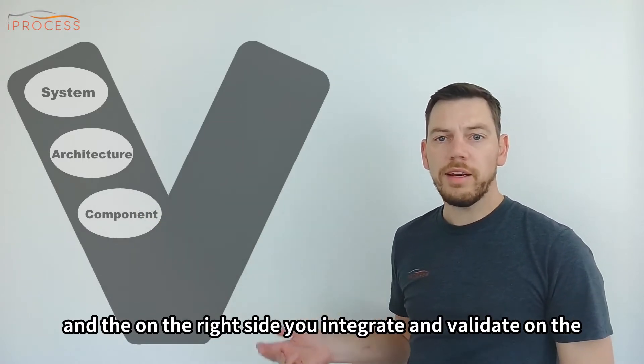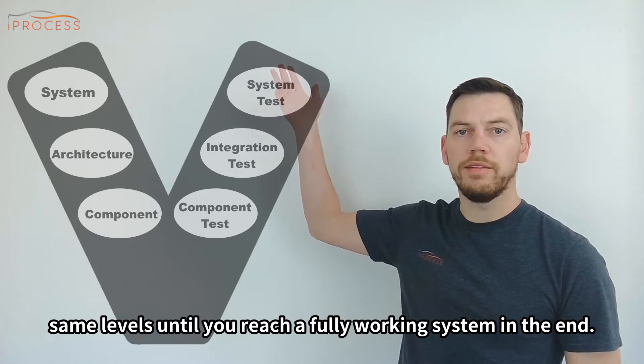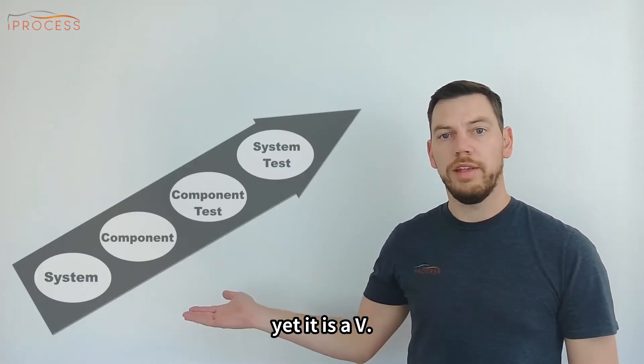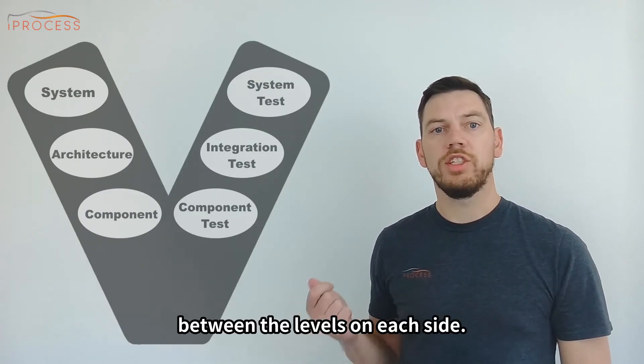And on the right side, you integrate and validate on the same levels until you reach a fully working system in the end. But that could also be drawn as just a simple arrow. Yet, it is a V. Reason for that is that there is a connection between the levels on each side.